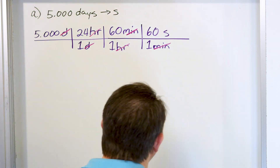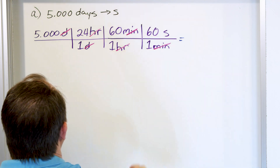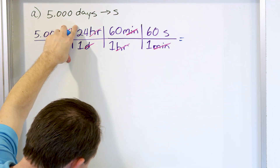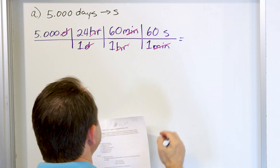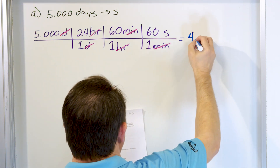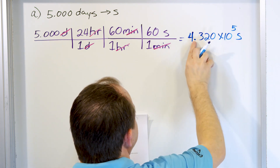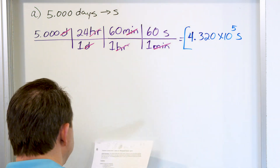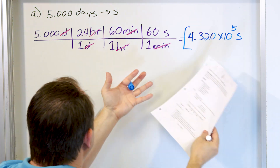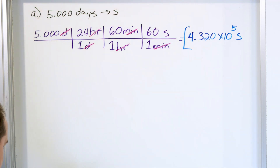You don't have to think about whether to multiply or divide — you arrange it so the units give you what you want. You take the 5, multiply by 24, multiply by 60, multiply by 60 again, and what you get is 4.320 times 10 to the 5 seconds. You move the decimal one, two, three, and then two more spots for five. The units cancel, so it has to be the correct answer.